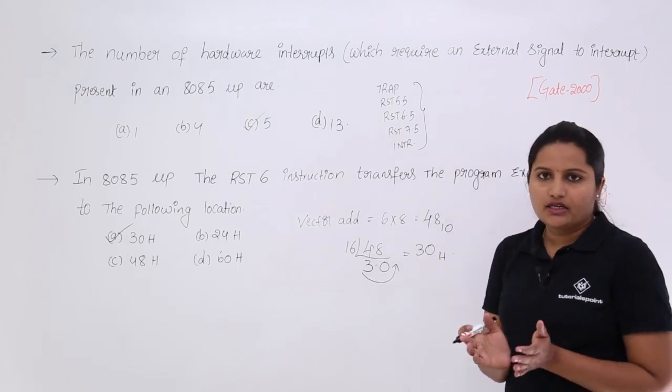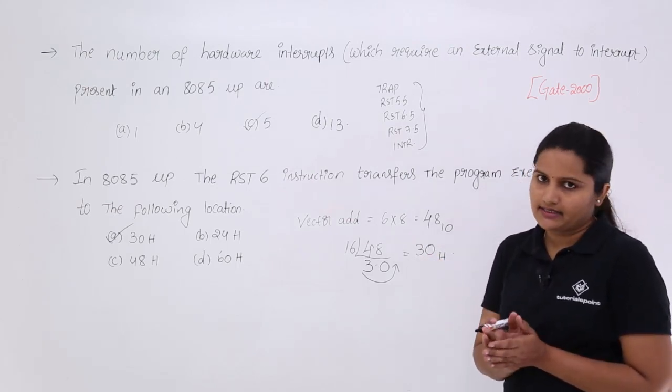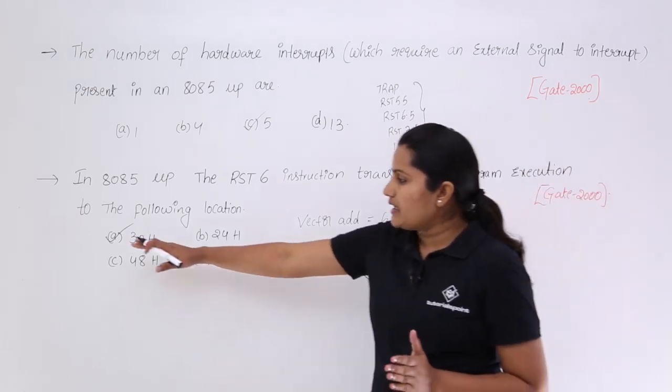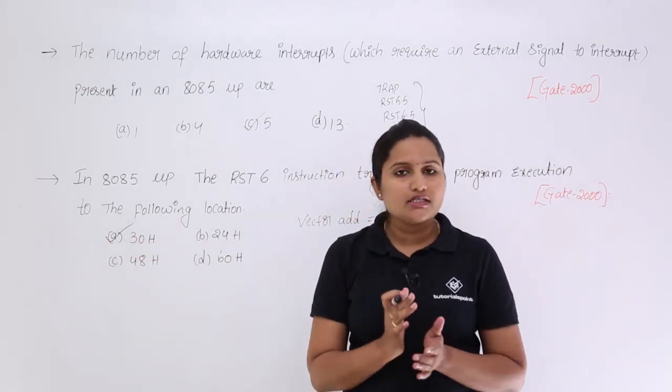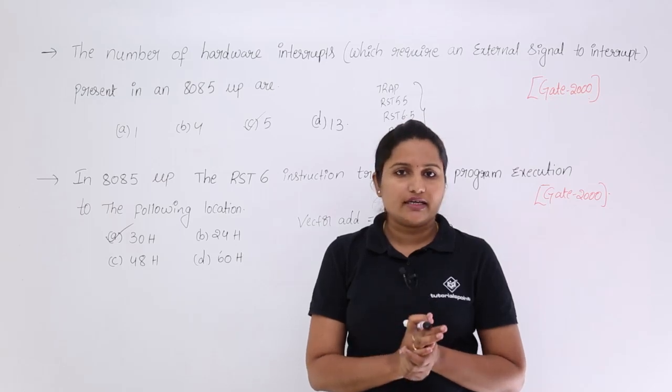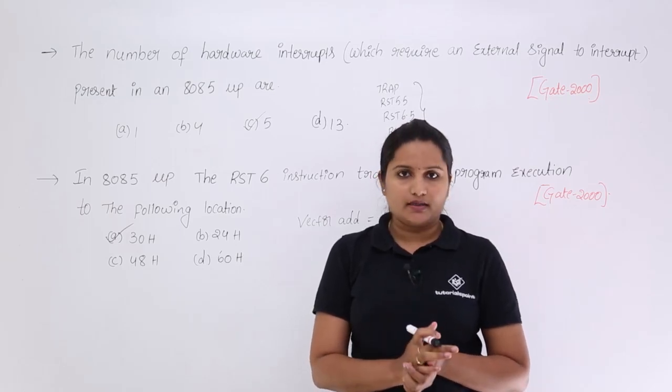We got this equivalent to 30 hexa. This is the option A, the right option for the second question. These 2 questions are given in GATE 2000 EC paper for 1 mark each.